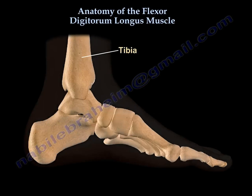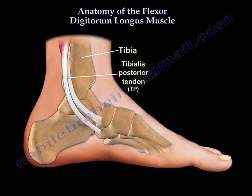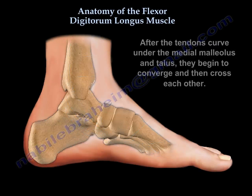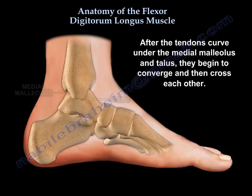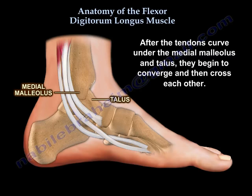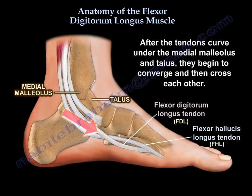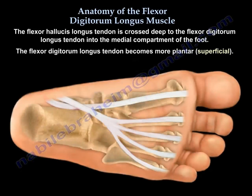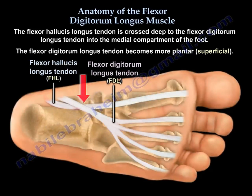What is the knot of Henry? It is the point of crossing of the two tendons — the flexor digitorum longus and the flexor hallucis longus. After the tendons curve under the medial malleolus and the talus, they begin to converge and eventually cross. The flexor hallucis longus crosses deep to the flexor digitorum longus tendon into the medial compartment of the foot, so the digitorum becomes more plantar or superficial.